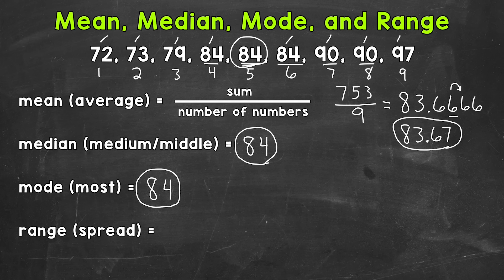Our largest number is 97. So 97 minus our smallest number, which is 72. This is going to give us our range. So 97 minus 72 is 25. So our range is 25.